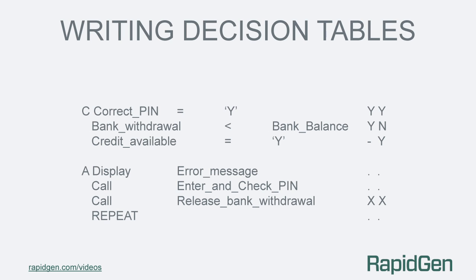For the next rule, the pin must be correct but there are insufficient funds in the bank. However, if credit is available then money can be dispensed, giving the rule Y N Y, dot dot X dot. The third rule: the pin is correct (yes), there are insufficient funds (no), and no credit is available (no). So the action is to display an appropriate error message (X) and the other actions are not performed, hence dots.